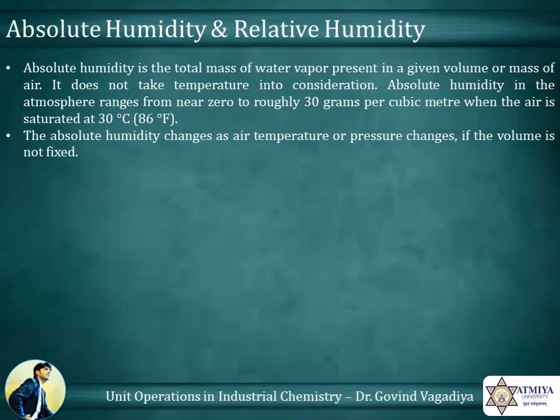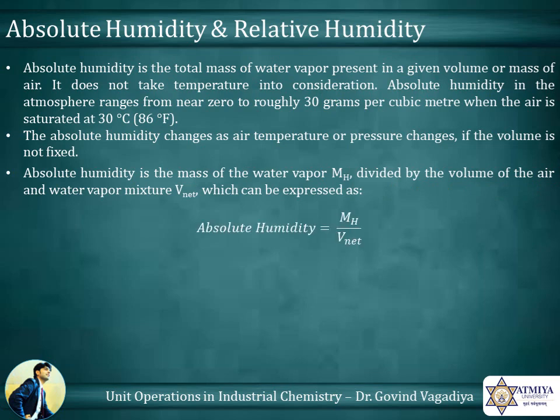Absolute humidity is the mass of the water vapor, Mh, divided by the volume of the air and water vapor mixture, V_unit.